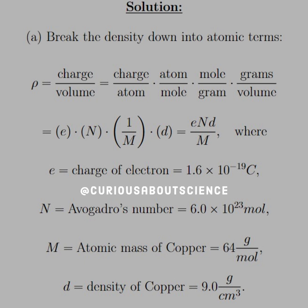Alright, so let's just go ahead and jump into the solution. For part A, we have to break the density down into atomic terms, meaning that we have charge over volume, but we need to break this down into charge per atom, atom per mole, mole per gram, and grams per volume.